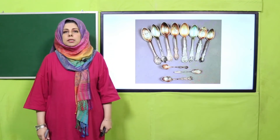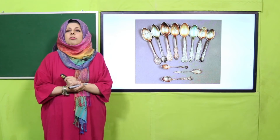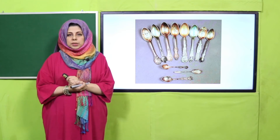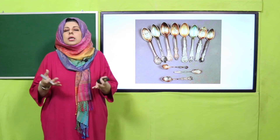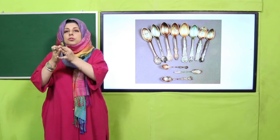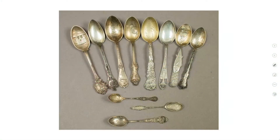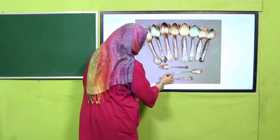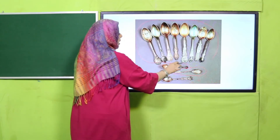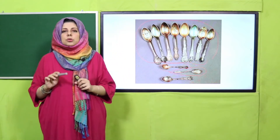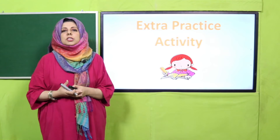Aur apne mama ke saath bhi share karna hai ki aaj humne kya sikha hai. To aaj aap jaraiye mama ki kitchen mein, aur mama se poochke aapne kaafi saare spoons ikthe karne hain. Jaise screen pe aapko spoons dikha rahi hain — waise apne kitchen mein spoons dhoondo jo hum khana khane ke liye istemal karte hain. Unko small, smaller aur smallest ki category mein set karke mama ko batana hai ke these spoons are small, these are smaller and these are the smallest. Aapko decide karna hai ki kaunse spoons small mein aate hain, kaunse smaller mein, aur kaunse smallest mein.